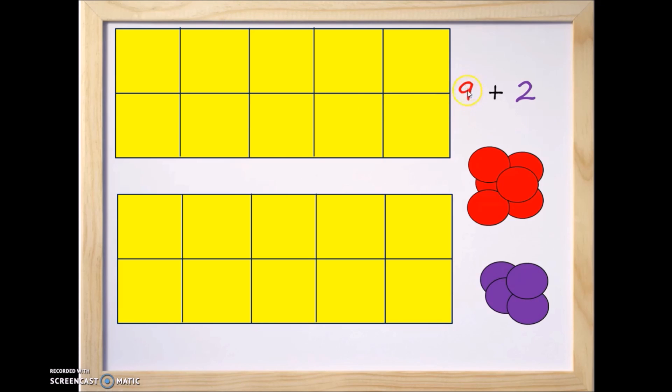The one on the top is going to represent the 9. The one on the bottom, we're going to use to represent the number 2. We're also going to be using counters. The red counters are for the number 9, and the purple counters are for the number 2.